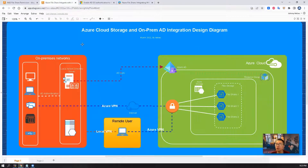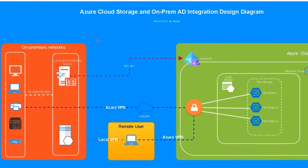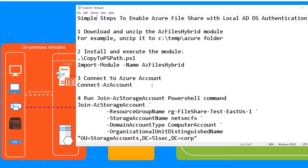If you already have your local Active Directory server, you may want to integrate your on-prem AD with your Azure Cloud Storage. In this video, I'm going to show you a couple of simple steps to enable Azure File Share with local ADDS authentication. We're going to download and unzip the Azure Files Hybrid module, install and execute it, and connect to the Azure account.